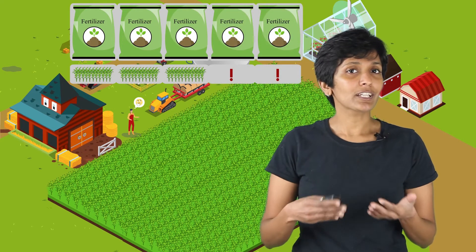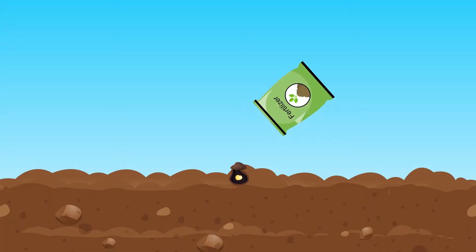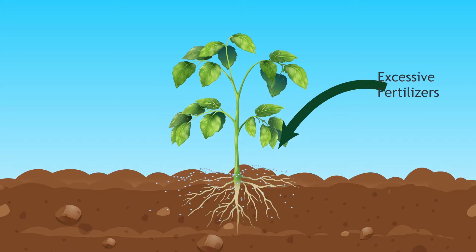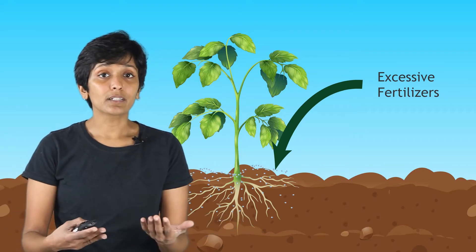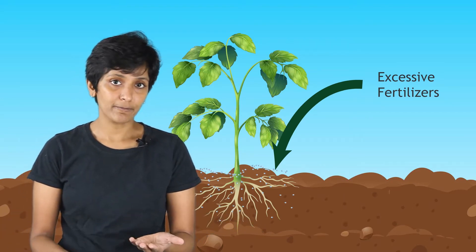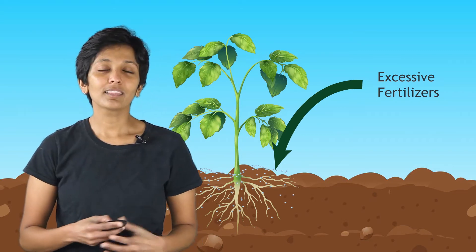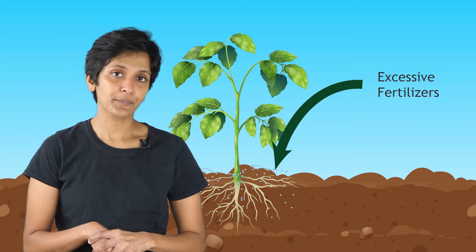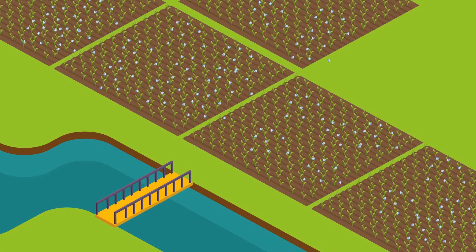Unfortunately, farmers didn't know where to stop. Plants couldn't take up fertilizers beyond a certain point, so they could not absorb them from the land anymore. All this excessive fertilizer was left on the soil, leading to three very harmful side effects. The first one was water pollution.